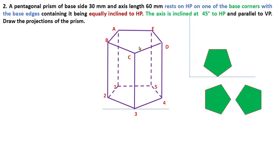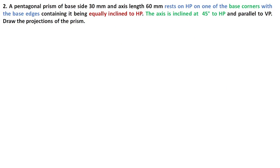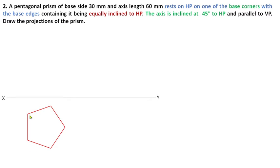ABCDE is the top face of the pentagonal prism and 1, 2, 3, 4, 5 is the base or bottom face of the pentagonal prism. ABCDE is visible from the top view; 1, 2, 3, 4, 5 is invisible from the top view, denoted in brackets. Draw XY, and keeping the corner on the right side, mark the base side dimensions of 30 mm and give names to all the corners.